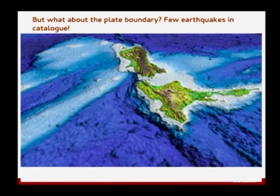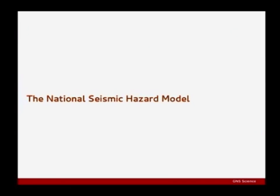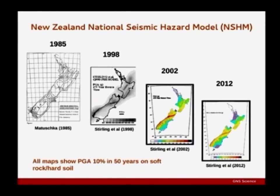Now into the model itself — it's gone through an evolution. One of the first was from Trevor Matuska in 1985. The biggest change came between 1985 and 1998 when Mark Sterling came up with a more modern version of PSHA, and you can see the differences where faults started to be included in the model — that's what drove the big jump. Since then it's been smaller revisions.